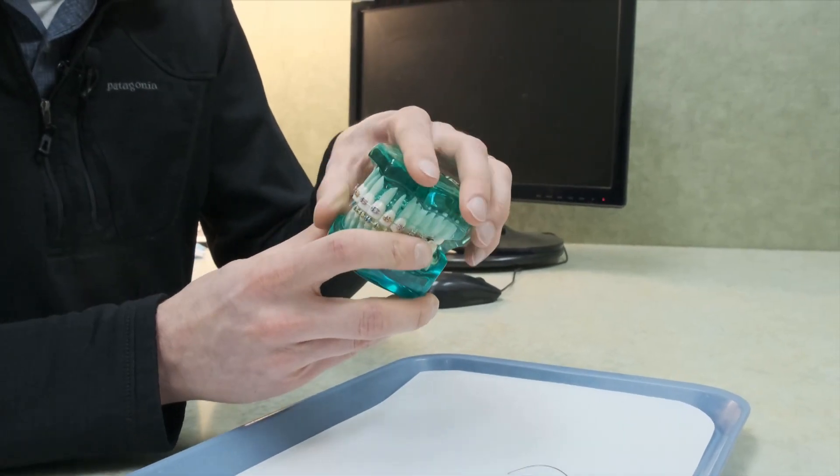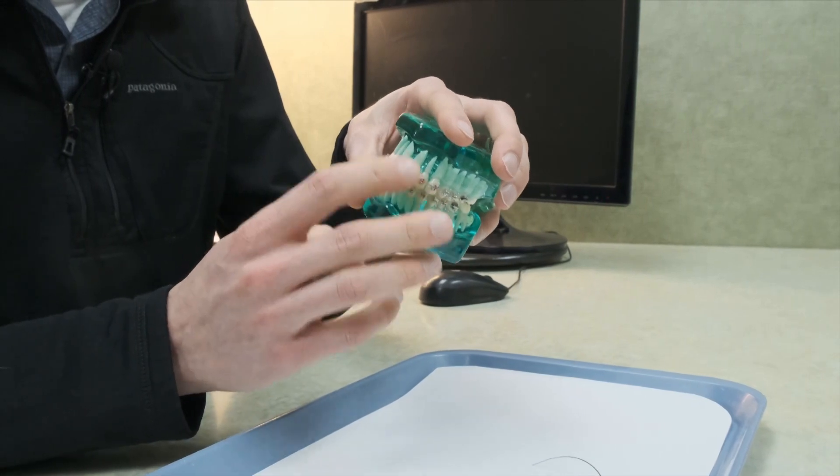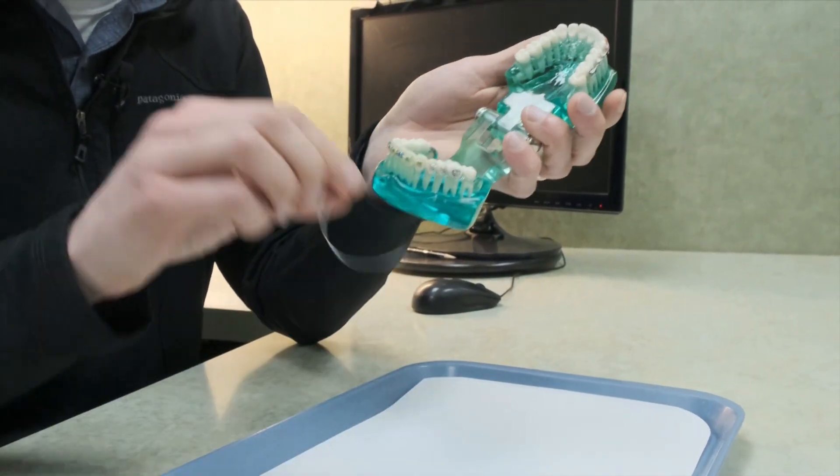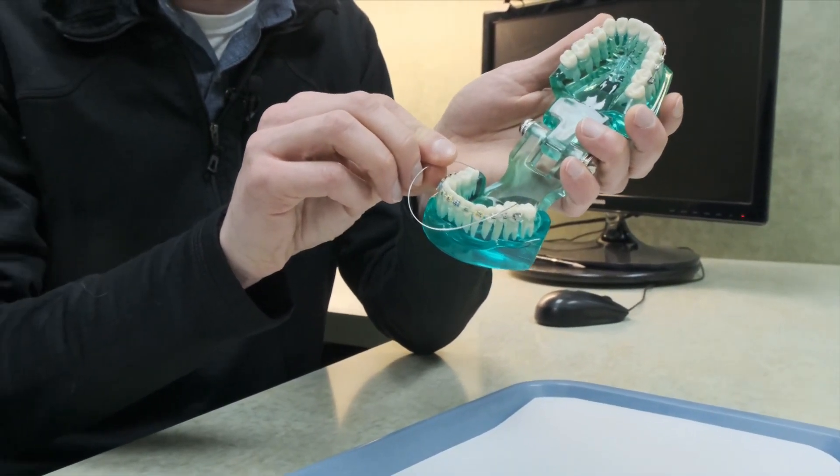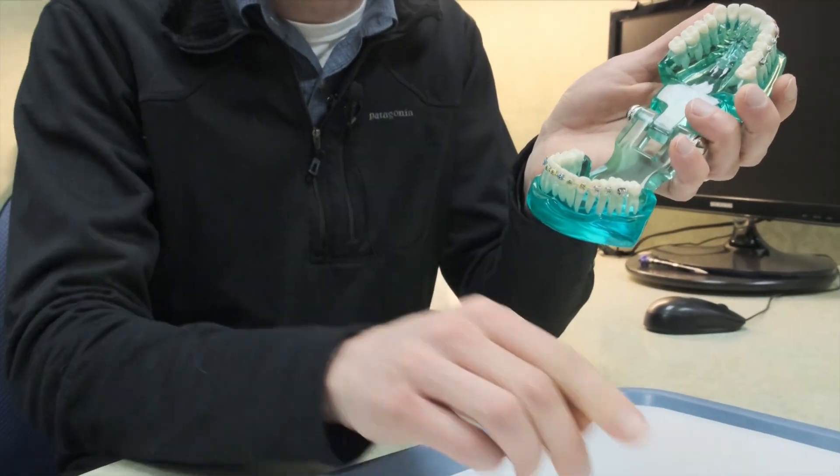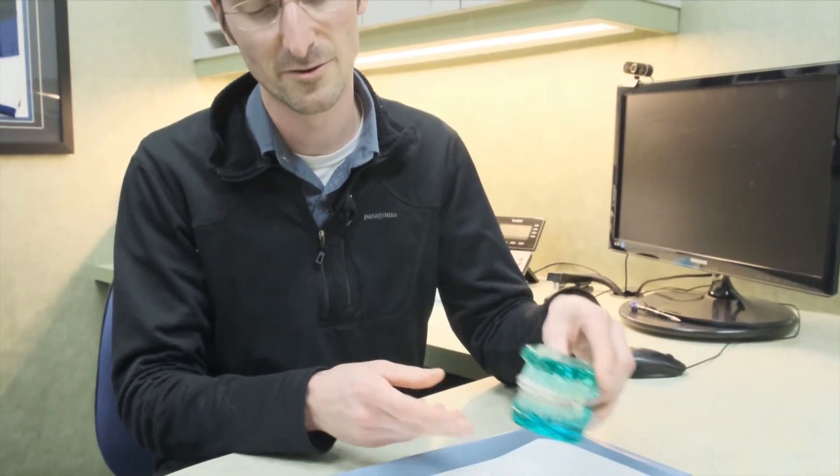Anytime somebody has a deep bite and their bottom teeth are being covered too much by the top teeth, and we're trying to flatten it out, we can put this wire in. That helps get our teeth lined up where we want them to be. That's called a reverse curve wire.